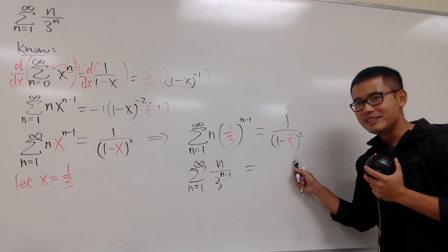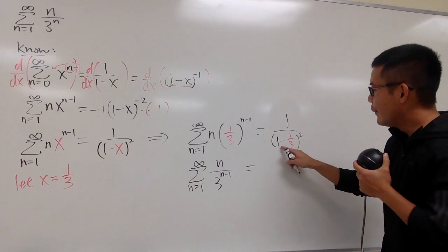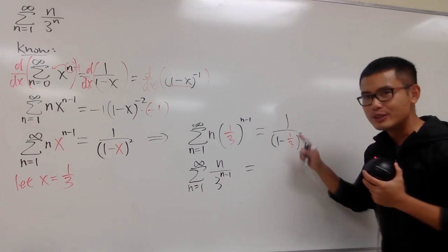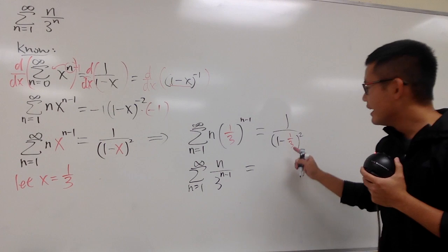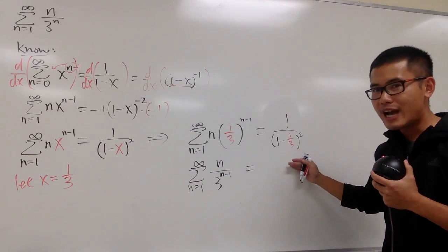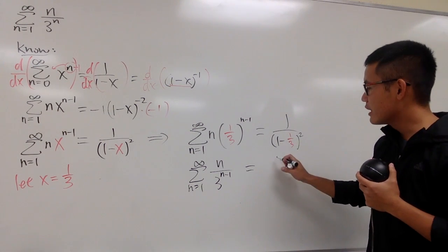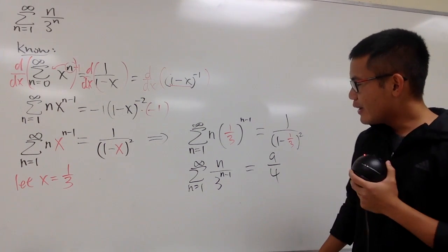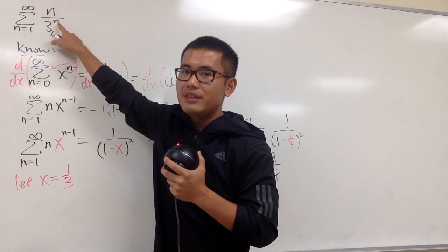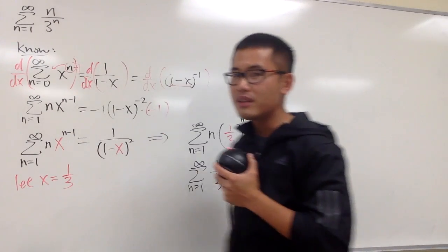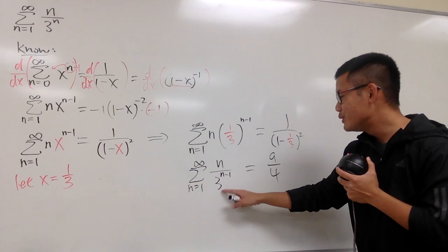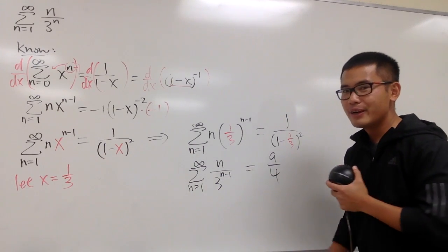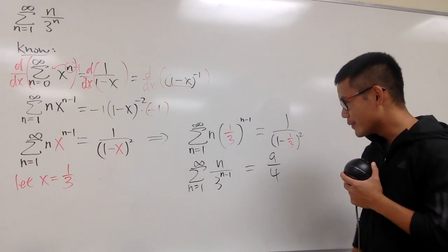Now, what is this? Let's do this in our head. 1 minus 1 third is 2 thirds. And if you square that you get 4 over 9, and if you do the reciprocal of that you get 9 over 4. And now, you see right here I need to have the 3 to the nth power in the denominator, but this is 3 to the n minus 1, what can I do?